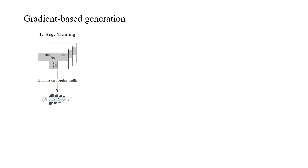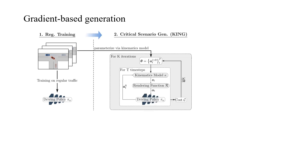In this work, we propose KING, which solves for safety-critical perturbations via backpropagation. Given a dataset of initial, non-critical situations and a driving model trained on this data, we start by parameterizing these scenarios via a kinematics model, where the trajectories of other agents are represented by the sequence of actions they execute throughout the simulation. To generate a safety-critical perturbation, we simulate the scenario with the driving model in closed loop and compute a driving cost, which measures how well the model does in the current variation of the scenario.